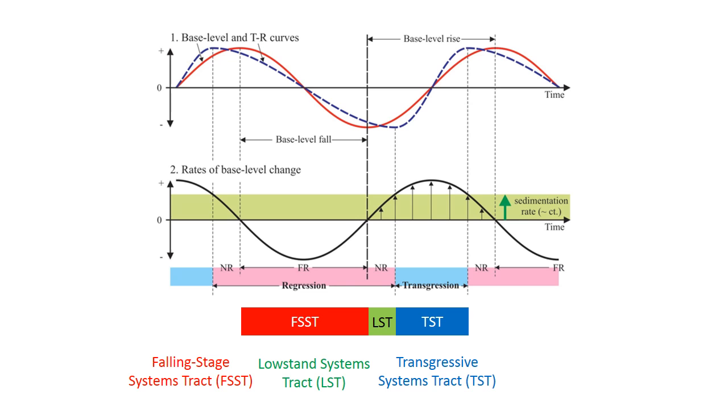Transgression defines, quite logically, the transgressive systems tract, or the TST. And finally, the last part of base level rise, characterized by normal regression, is called the high stand systems tract, or the HST. Conveniently, these systems tracts have fairly logical names, so it's not too difficult to remember how they fit into the base level cycle.